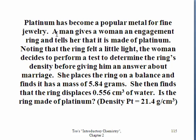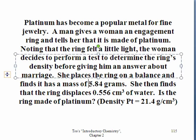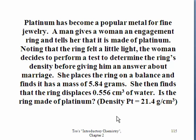So let's look at this example. A man gives a woman an engagement ring and tells her that it is made of platinum. Noting that the ring felt a little light, the woman decides to perform a test to determine the ring's density before giving him an answer about marriage. She places the ring on a balance and finds that it has a mass of 5.84 grams. She then finds that the ring displaces 0.556 centimeters cubed or milliliters of water. Is the ring made of platinum? The density of platinum is 21.4 grams per centimeter cubed. So take a second, pause the slide, and figure out if the ring is actually density, if the ring is actually platinum.